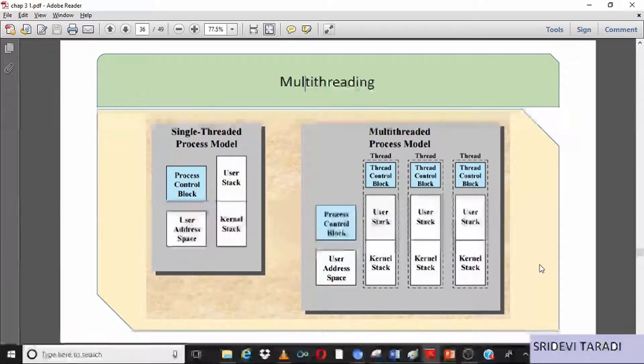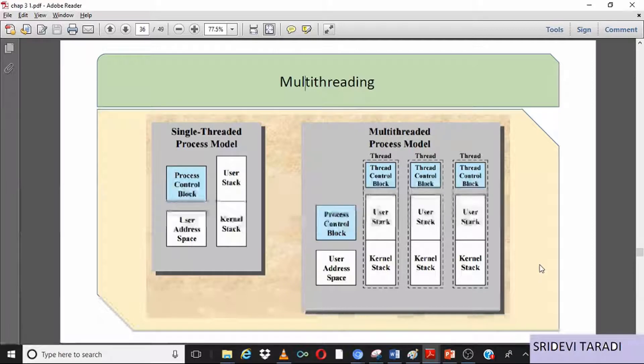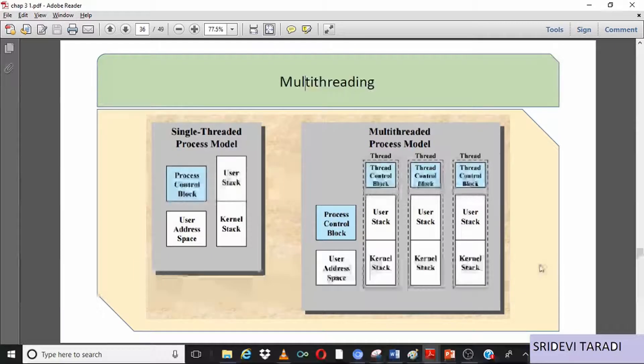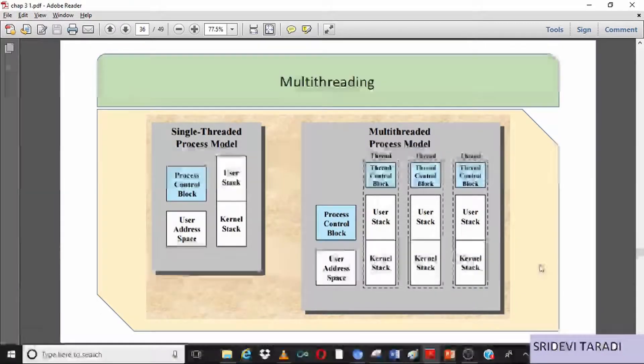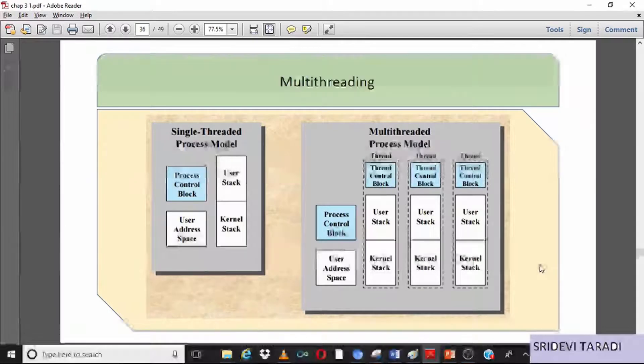For each singular thread. Whereas in the multi-threaded model, suppose there are three threads—then for one process there is one PCB and one address space. However, each thread has a thread control block which contains information about the thread.